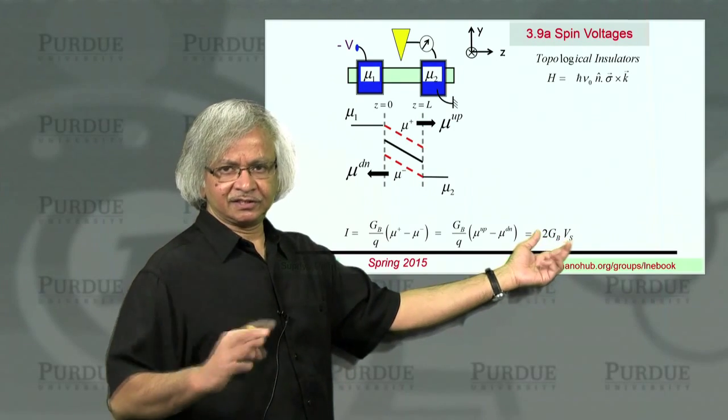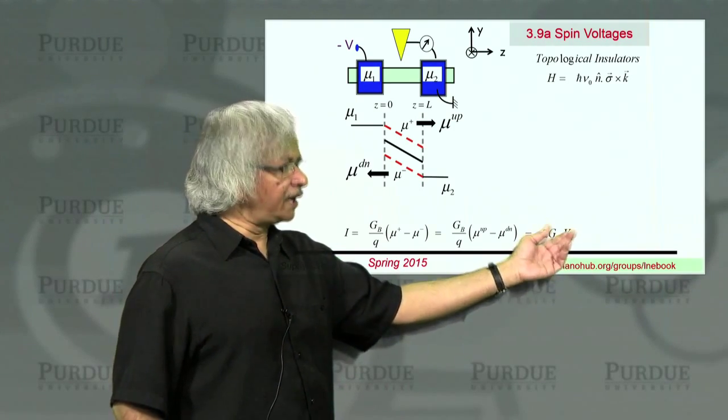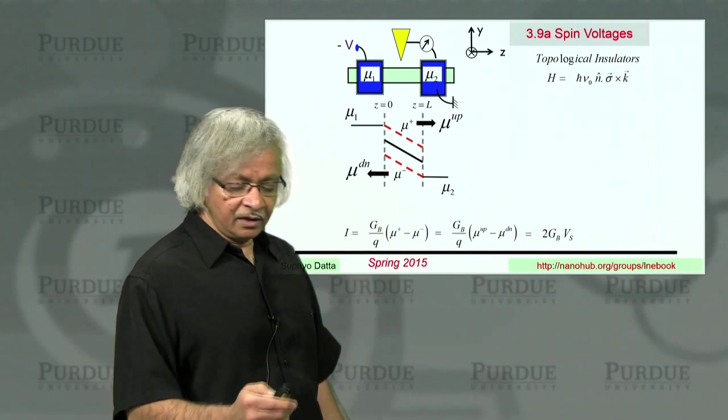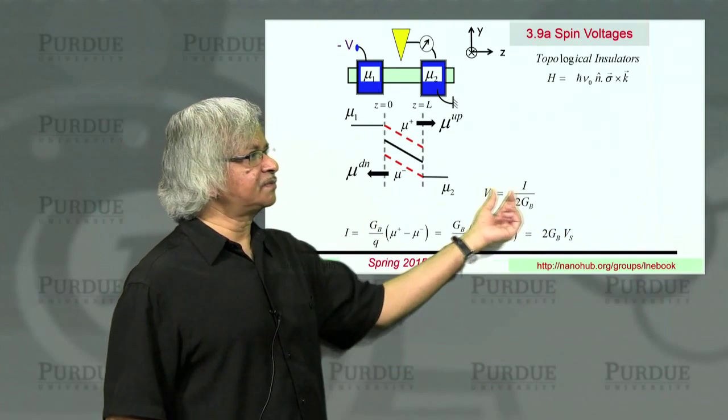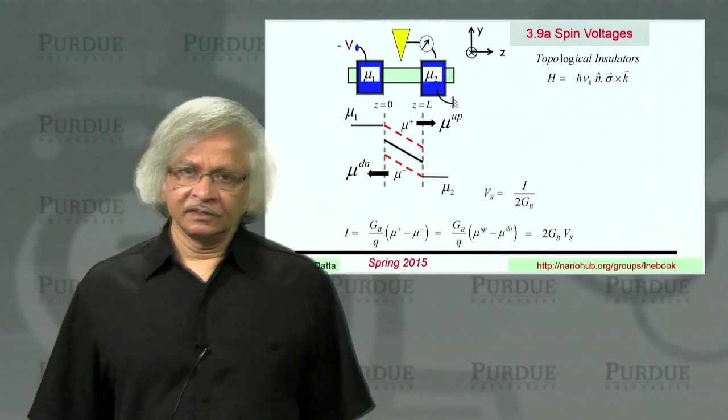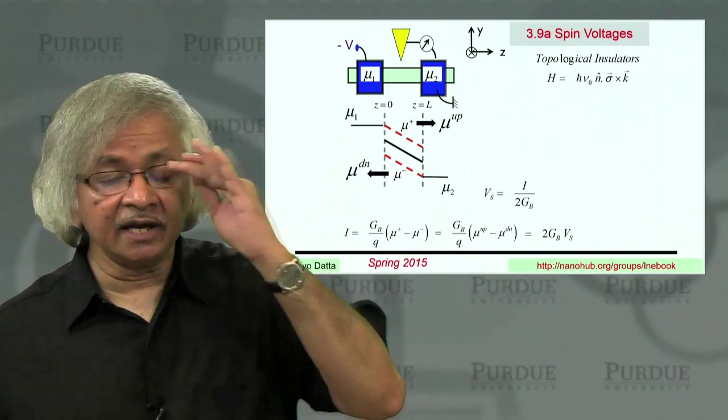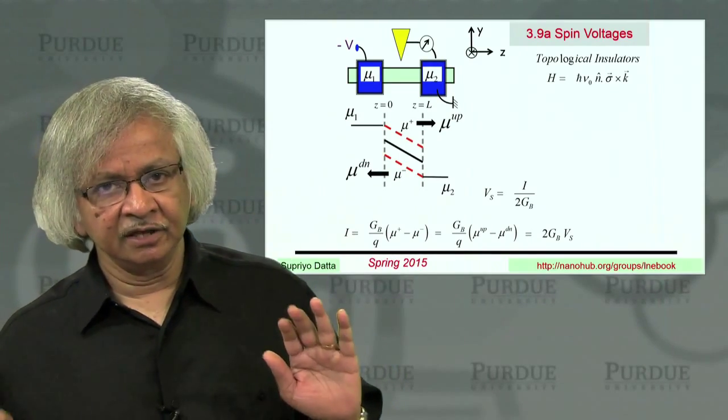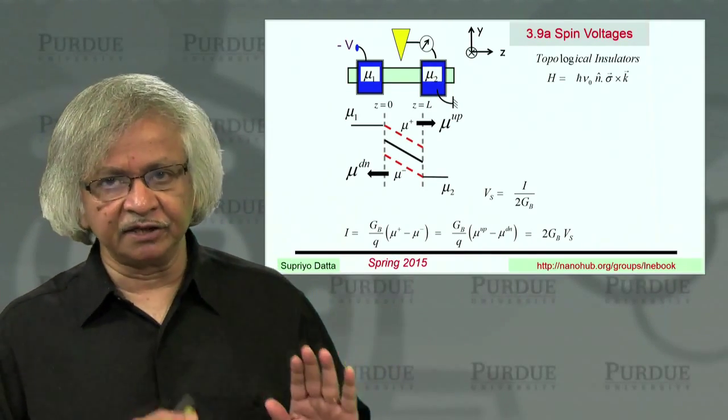So you could write this as the current as the spin potential times this ballistic conductance. And this factor of 2, that's just a matter of convention. And you could turn it around and write the spin potential as proportional to the current. So the point is that in this class of materials, any time you have a flow of current, there will be an associated spin potential.